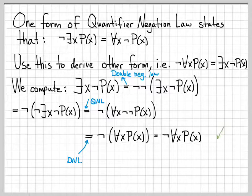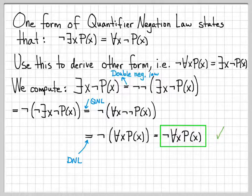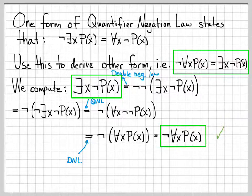So look what I've done. I started with the equation there exists x not P of x, and I did very simple manipulations to result in not for all x P of x. And this is exactly what I was trying to establish. This was the other form of the quantifier negation law that I was trying to prove.